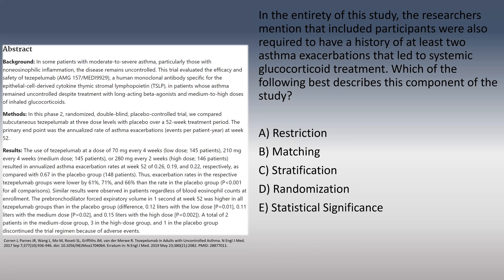The second question states: in the entirety of the study, researchers required included participants to have a history of at least two asthma exacerbations that led to systemic glucocorticoid treatment. Which of the following best describes this component of the study? Options are: A, restriction; B, matching; C, stratification; D, randomization; or E, statistical significance. The answer is A, restriction.